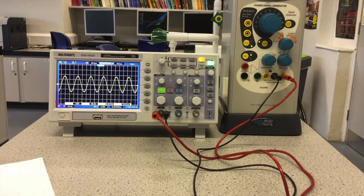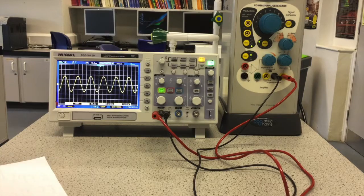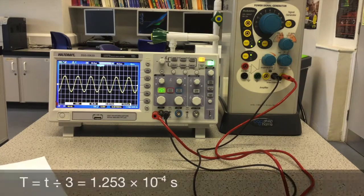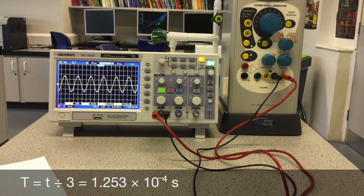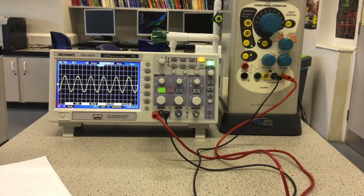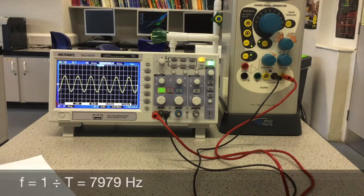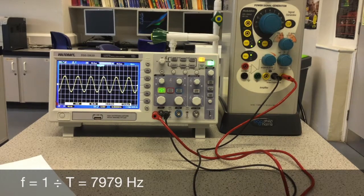And then I divide that by 3, that's the time period which is 1.253 times 10 to the minus 4, and take the reciprocal of that, so that's 7,978.